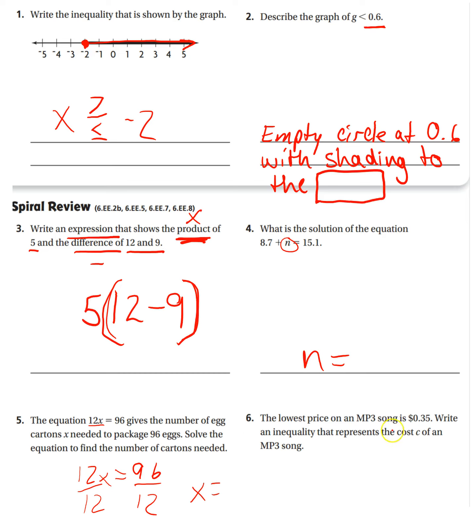Number six, the lowest price on an mp3 song is 35 cents. Write an inequality that represents the cost C of an mp3 song. So I know I'm going to have C as my variable. The lowest price is 35 cents, so it can be equal to 35 cents. So I know I'm going to have 35 cents on the other side.